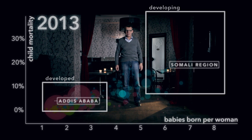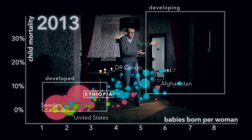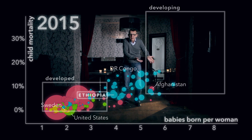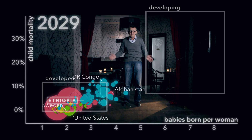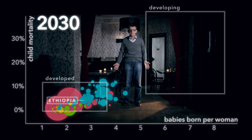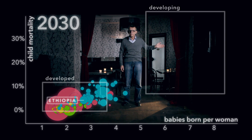Most people think that the problems in Africa are unsolvable. But if the poorest countries can just follow the path of Ethiopia, it's fully possible that the world will look like this in 2030. Then there will be no countries left in the box we once called the developing world. But to ensure that that happens, we must measure the progress of countries. It's only by measuring we can cross the river of myths.